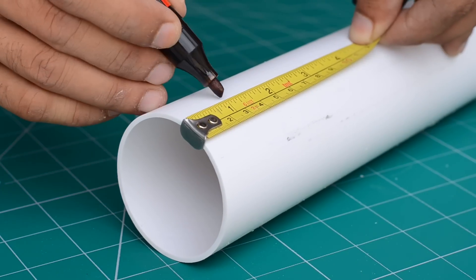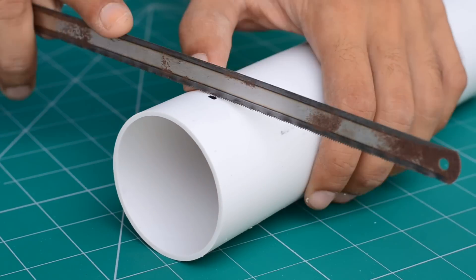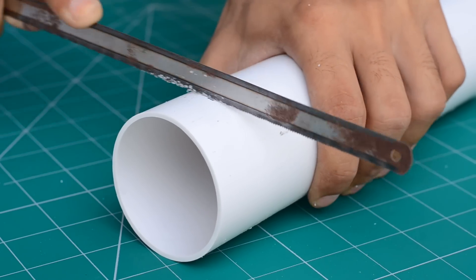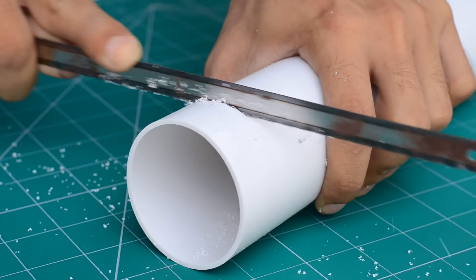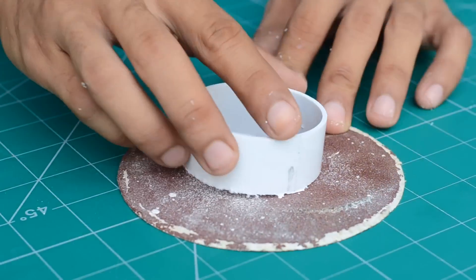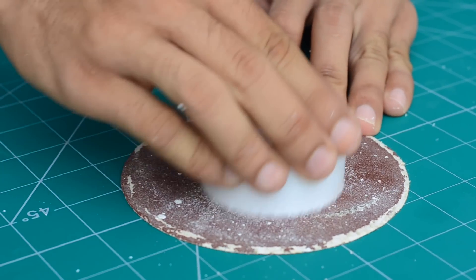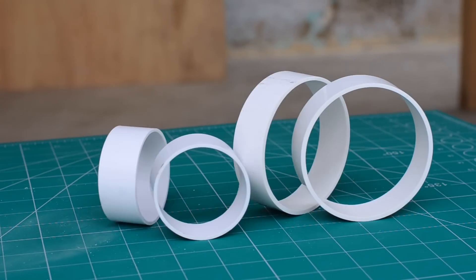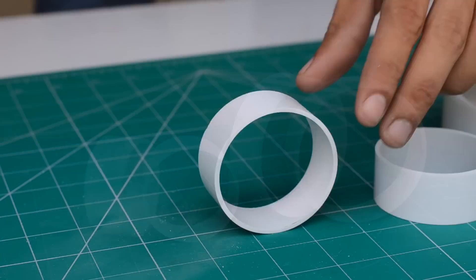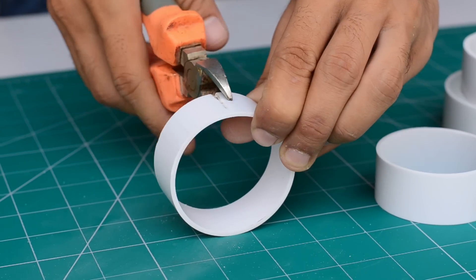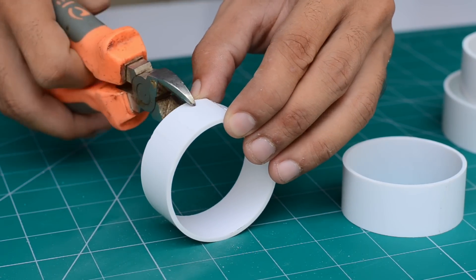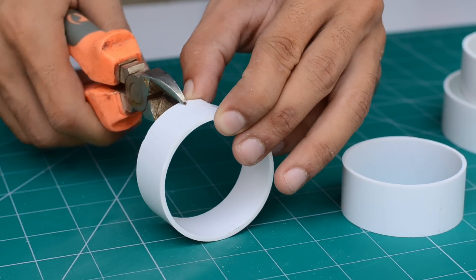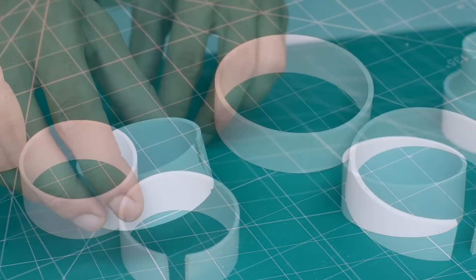Next I cut down one inch wide strips out of two and three inch PVC pipes using a hacksaw blade. Later I sanded the edges to make sure all the pieces have uniform width. The corresponding strips were then glued together to increase the wall thickness which will help us mount the ball bearings accurately.